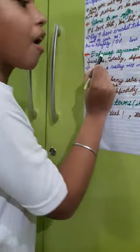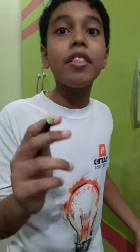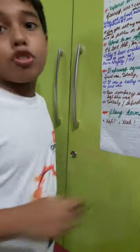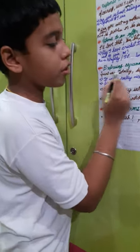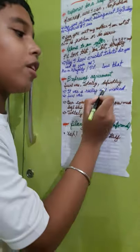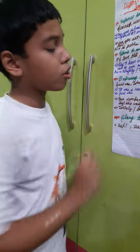Next topic: expressing agreement. This is when you agree with a statement. Instead of saying yes I agree, we can use 'sure was,' 'totally,' or 'definitely.' For example: it was a really nice weekend — instead of yes, you can say 'sure was,' because sure means you are certain and was is past tense, so it fits perfectly.